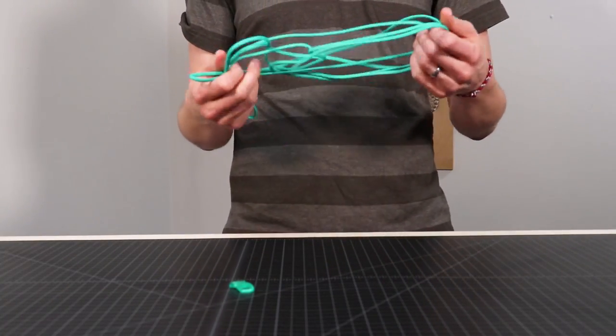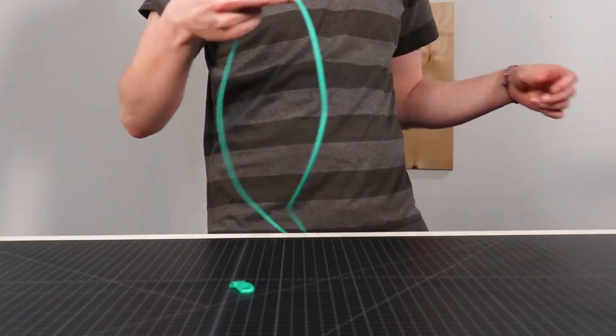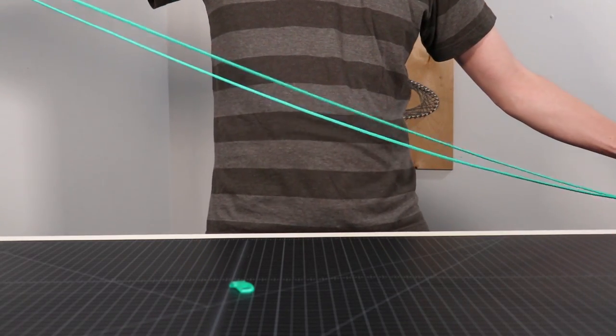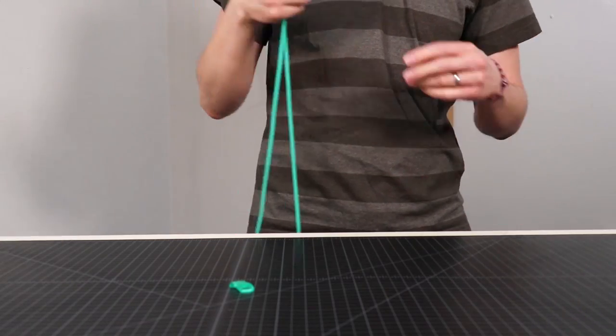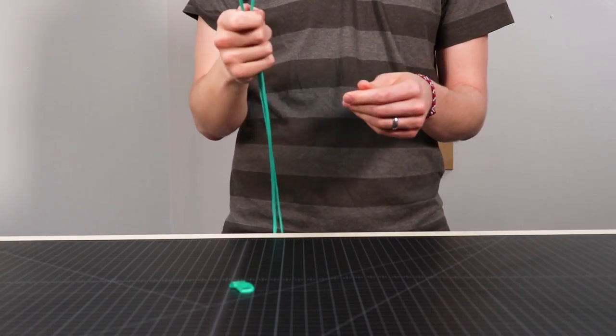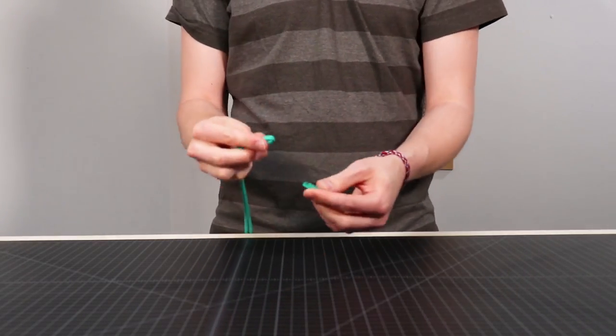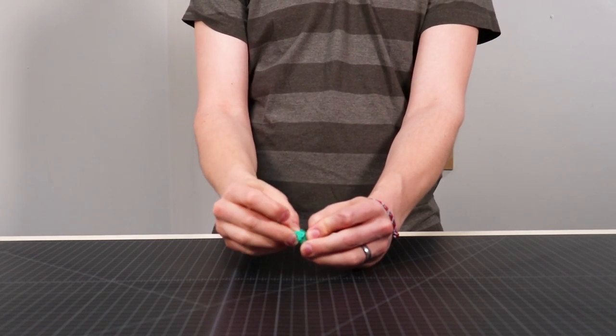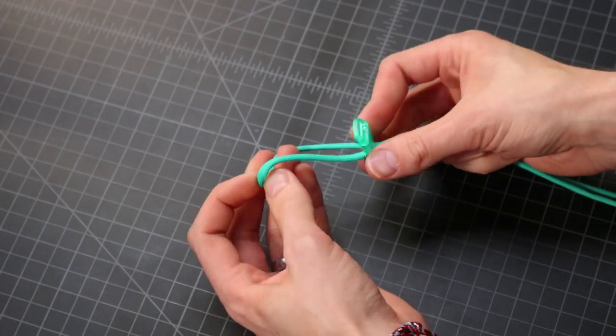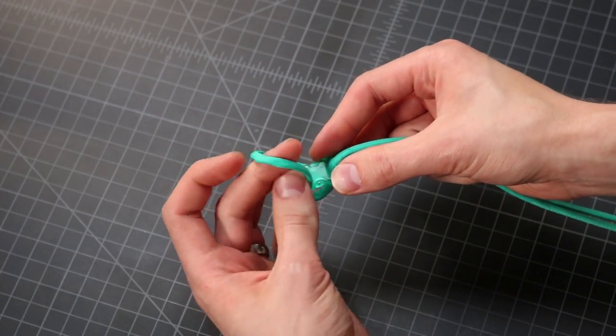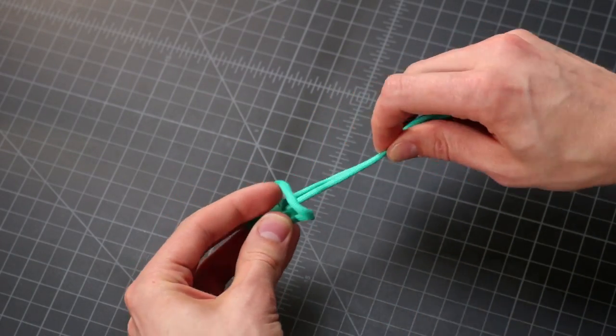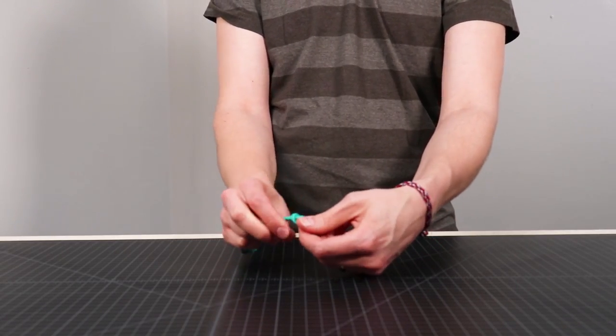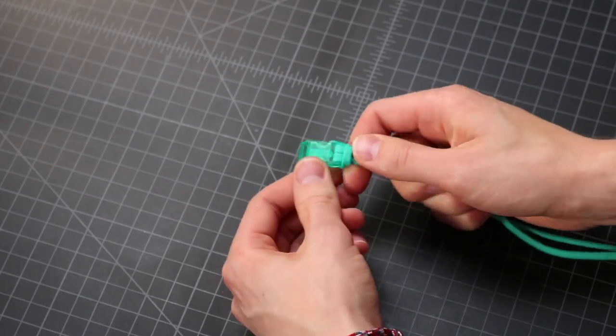We're gonna be using a variation of the Solomon's Dragon Weave, which we recently made a Game of Thrones bracelet in that style. But this one's gonna be a little bit different, and then it's gonna have that micro cord weaving on it too. So start by finding the middle of your cord and put that down through one side of the buckle. This is just a standard setup.